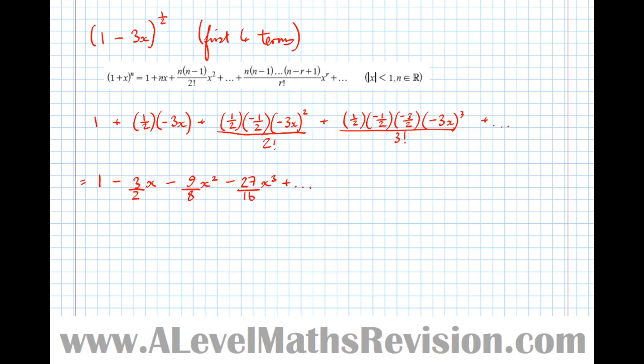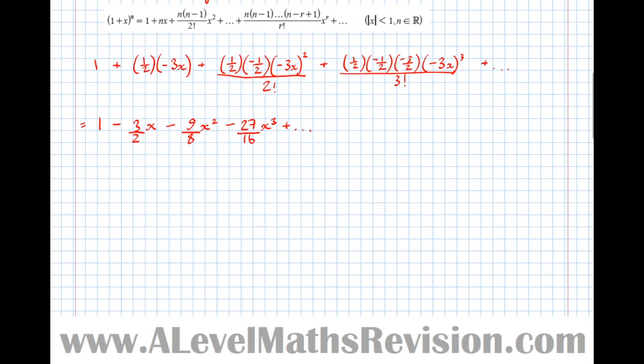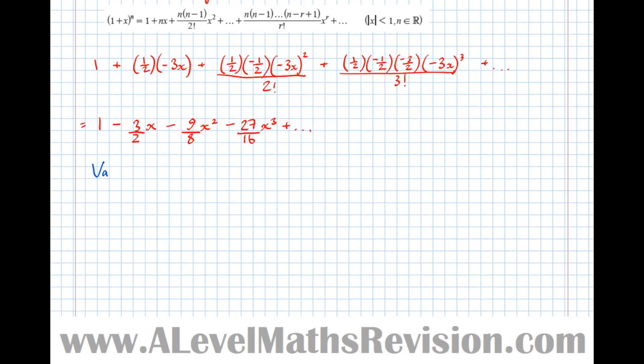The next bit is to look at this statement here: mod x is less than 1, because the binomial expansion is only valid for certain values of x. Validity of expansion.